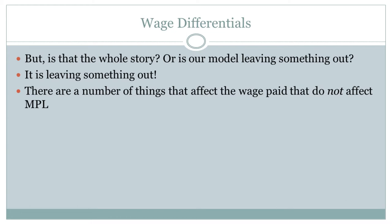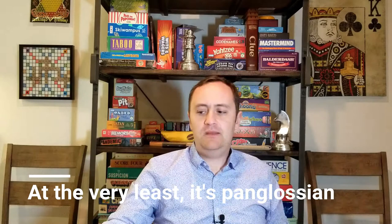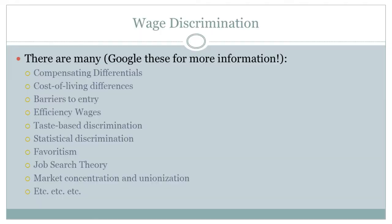However, this is not going to be the entire story of wage differentials. You can probably guess this from the very rosy picture it paints — everyone gets paid exactly what they're worth — which may or may not match your view of the world. So we're leaving something out. There are a number of things that affect your wage without affecting your marginal productivity of labor. Differences in marginal productivity are a fair reason to pay differently — someone produces more, you pay them more. But there are also many other reasons why different people get paid different wages that have nothing to do with differences in human capital.